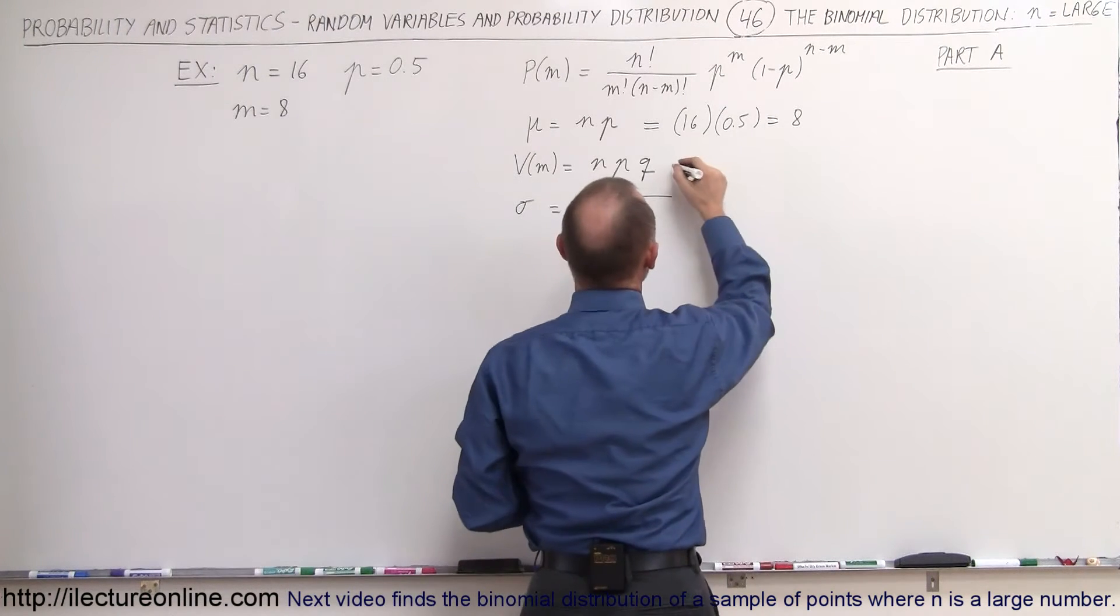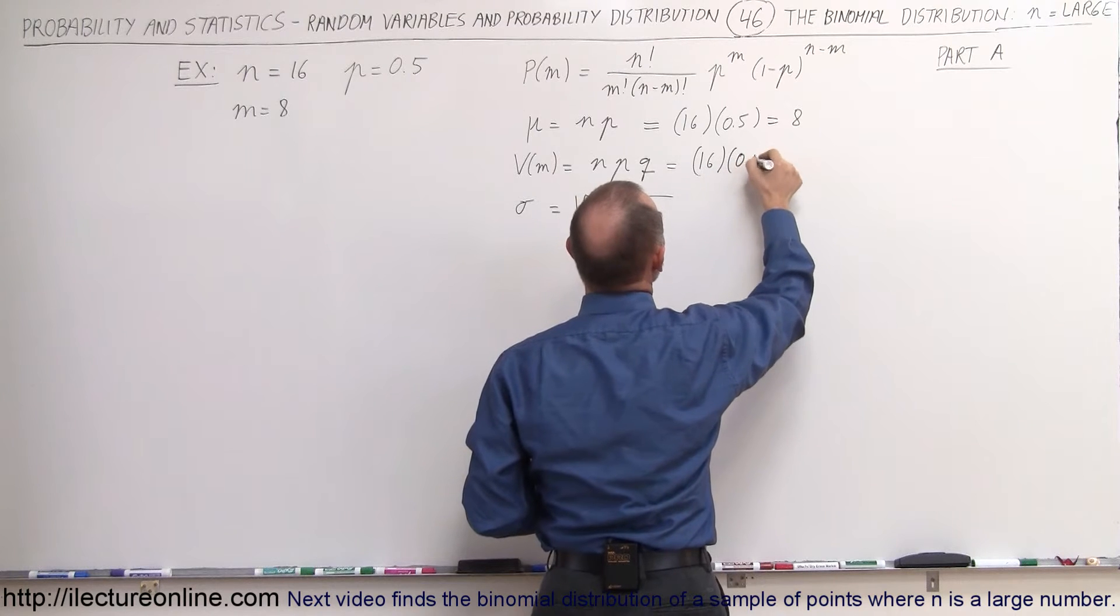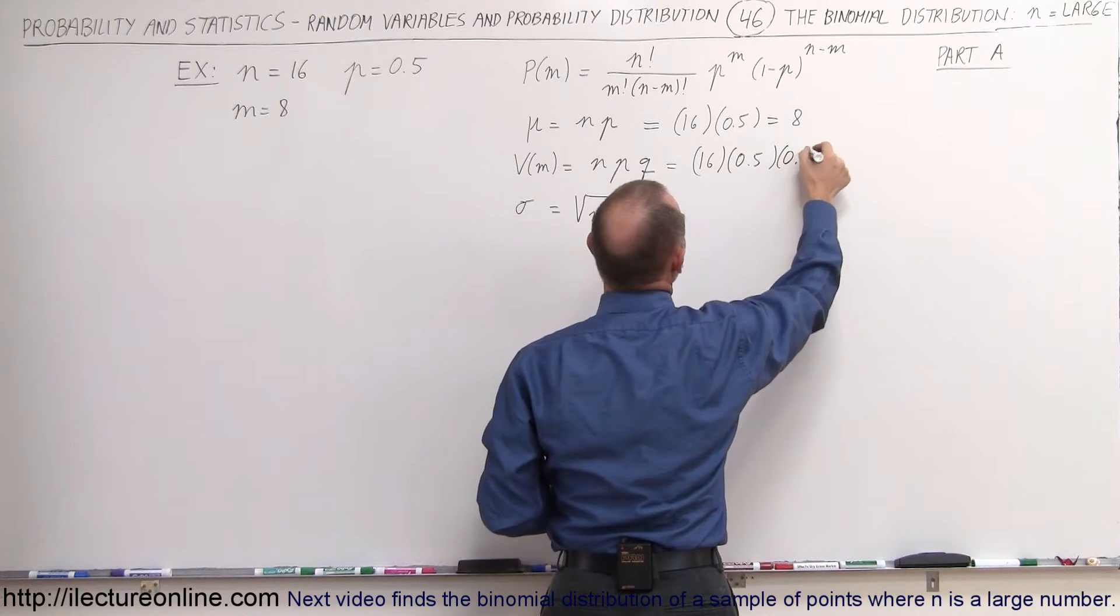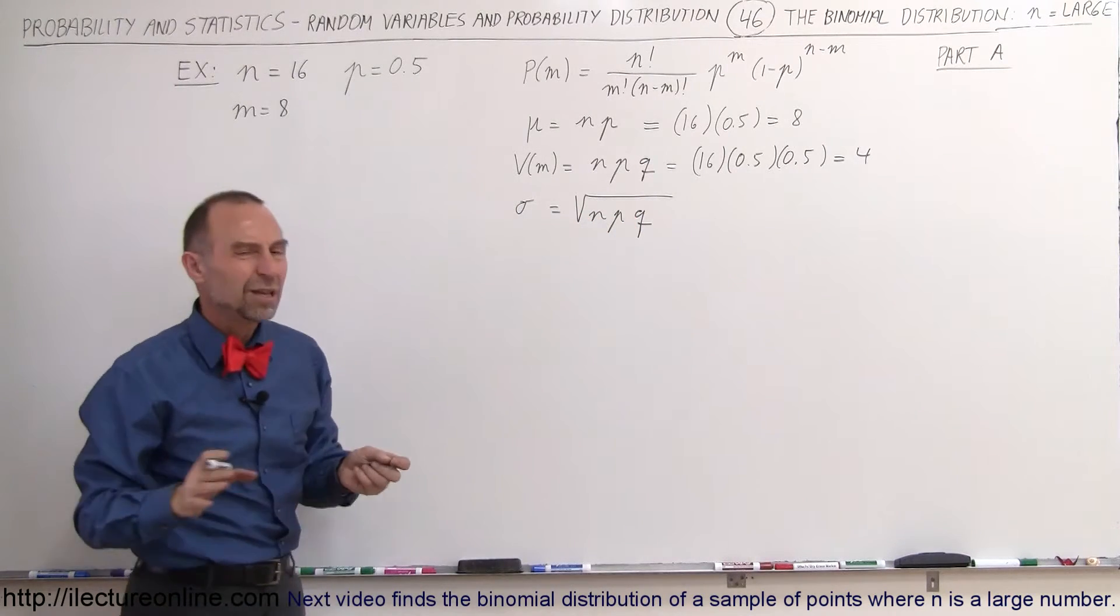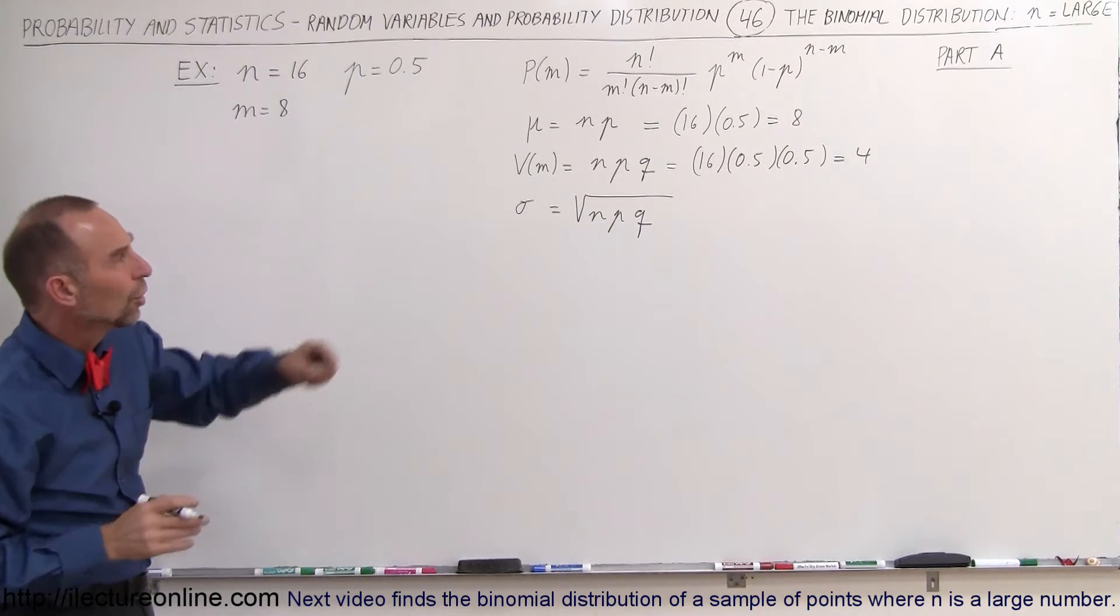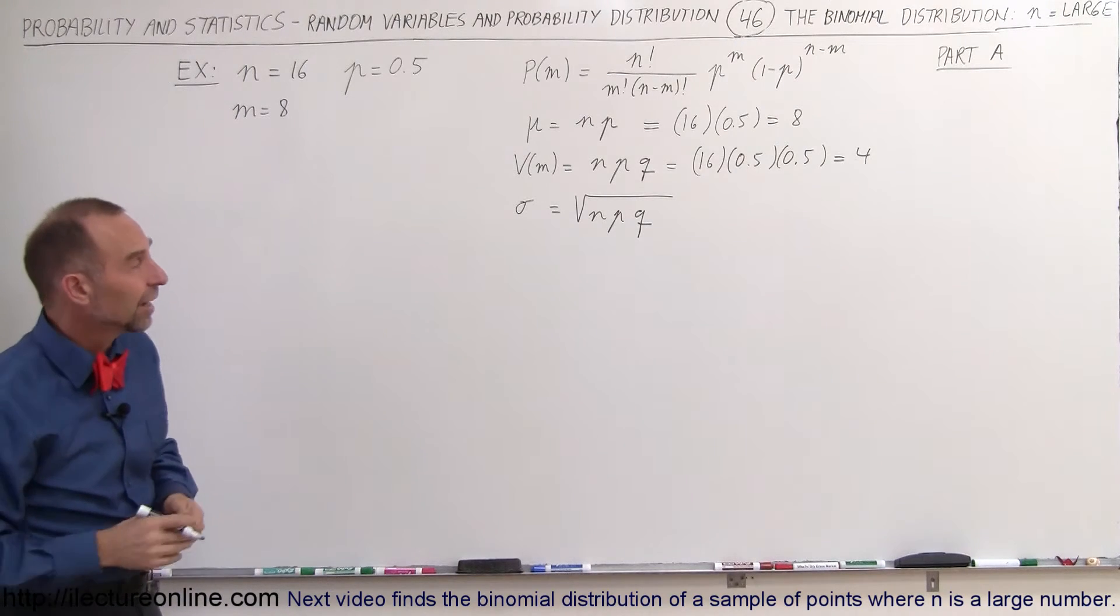Then the variance is going to be equal to n, which is 16, times p, which is 0.5, times q, which is also 0.5. So that equals 4. You have a variance of 4, which means it's not a very tight distribution relative to the average value. If it's half the average value, then it's not a very tight distribution.